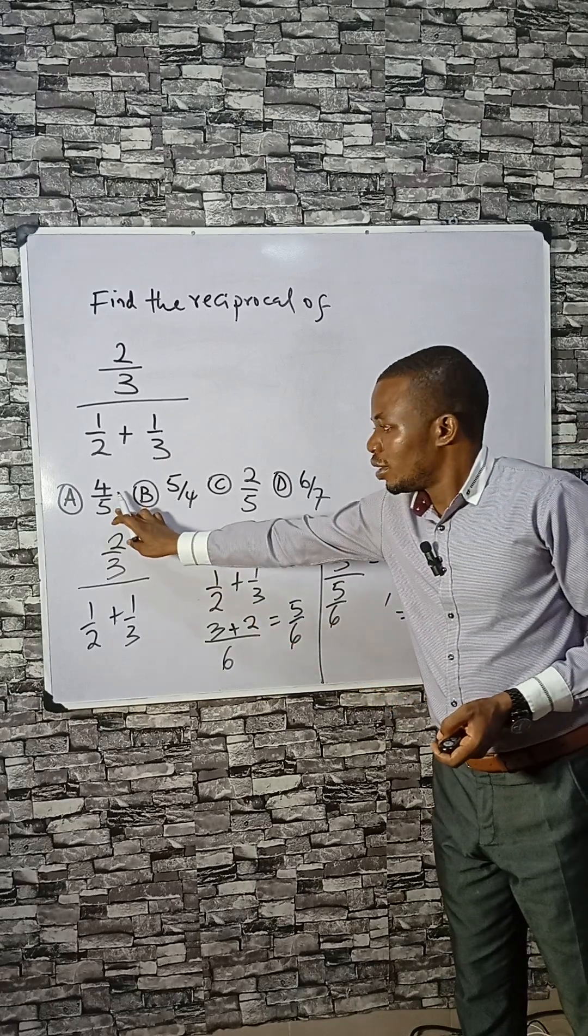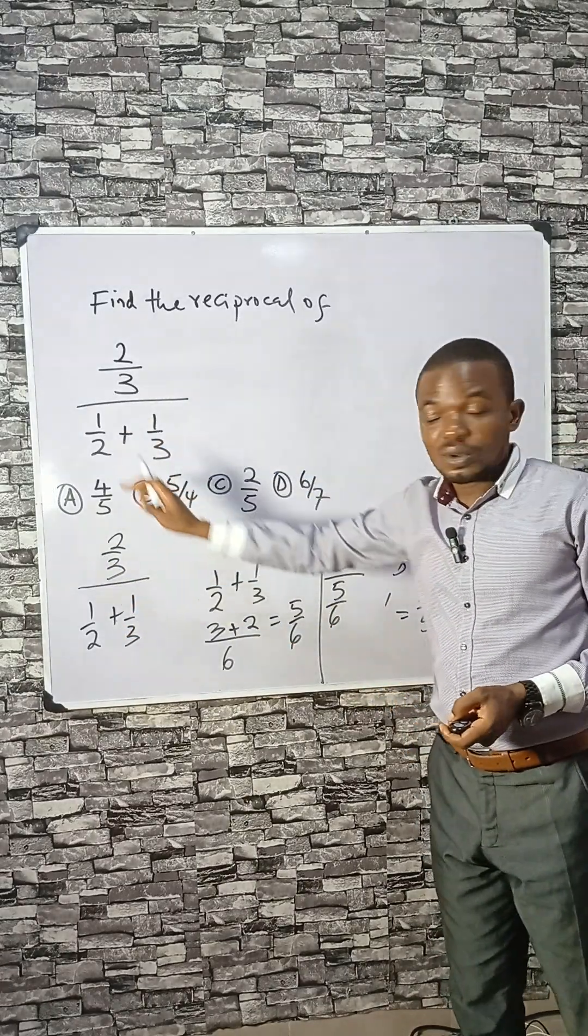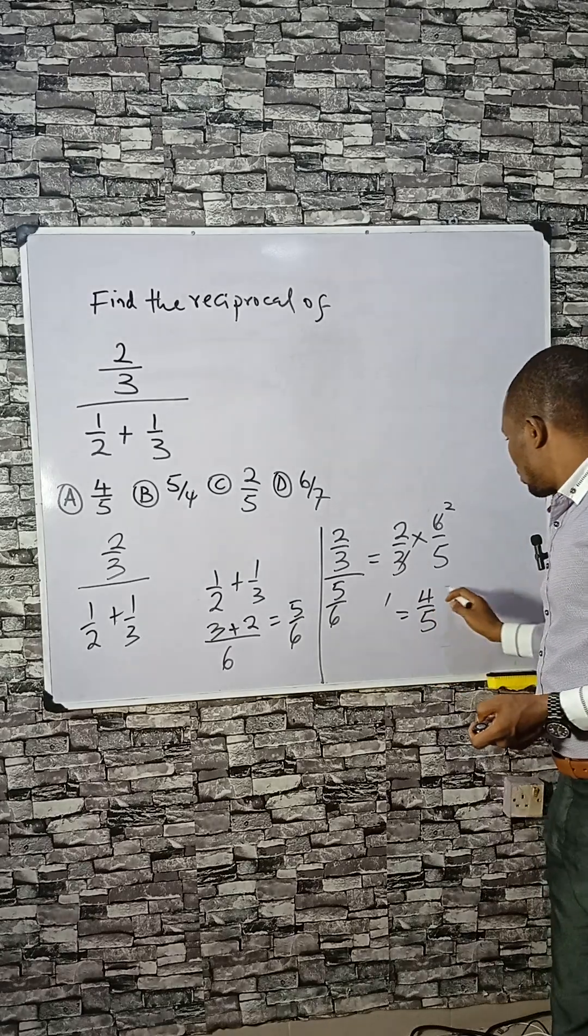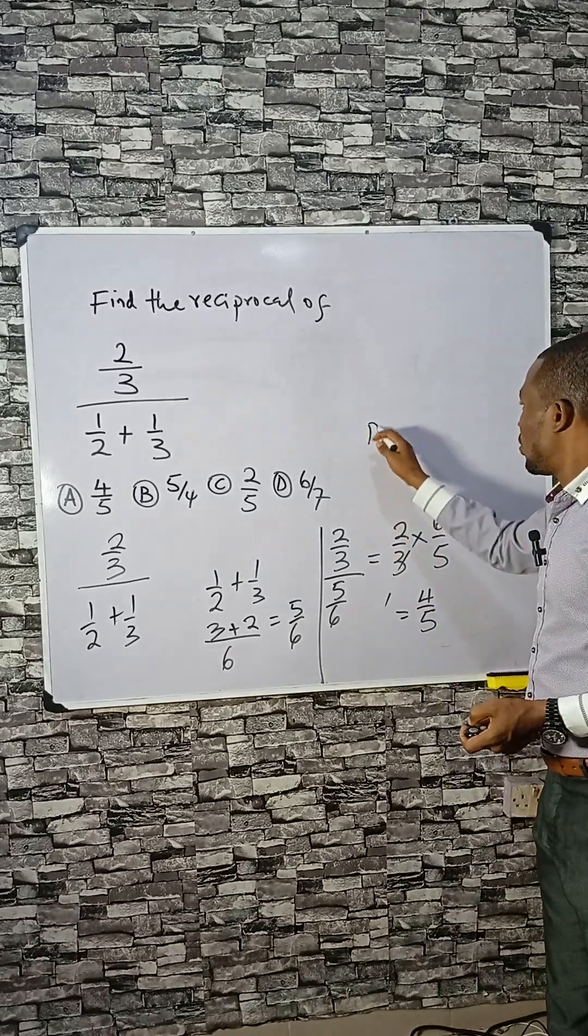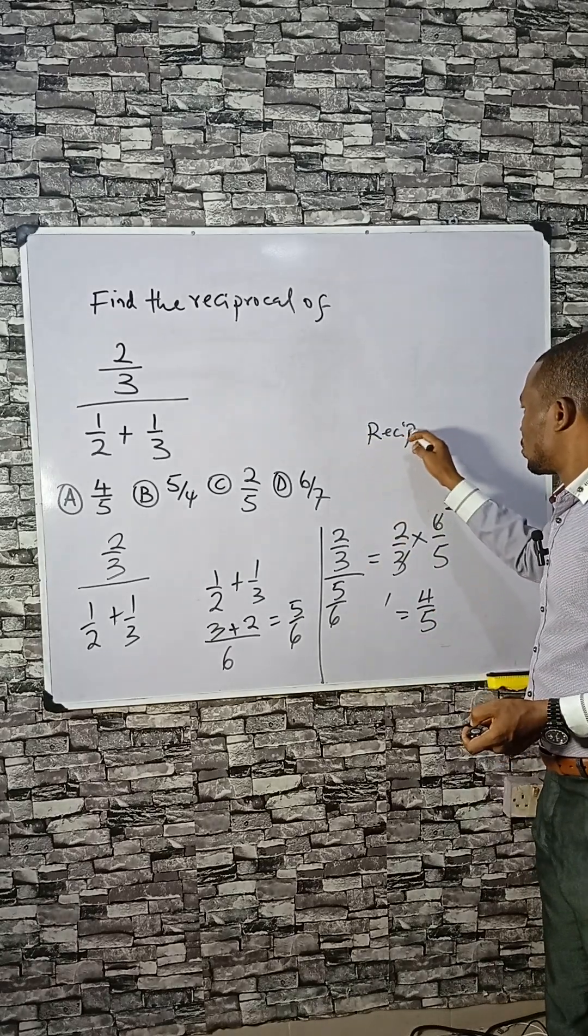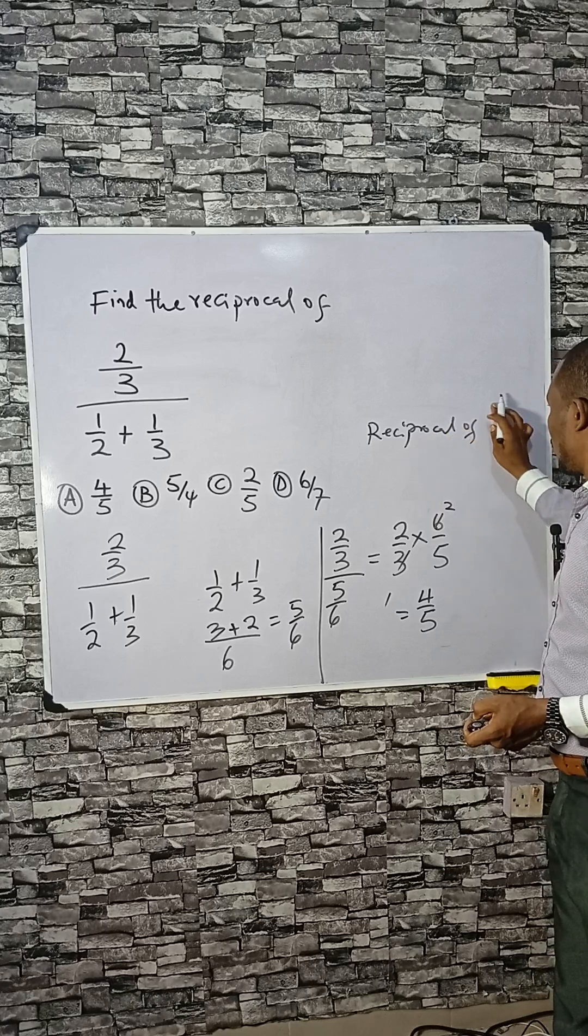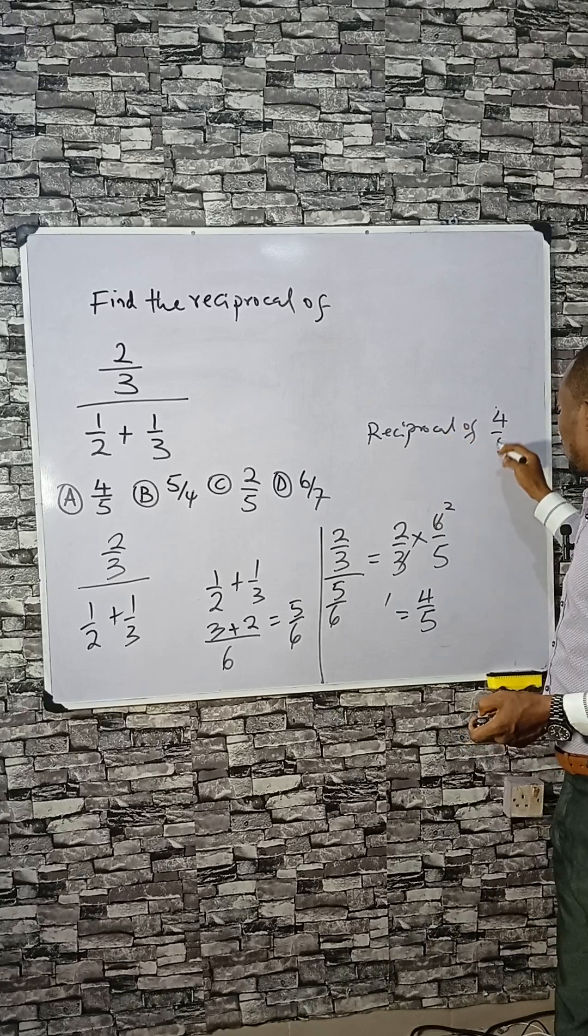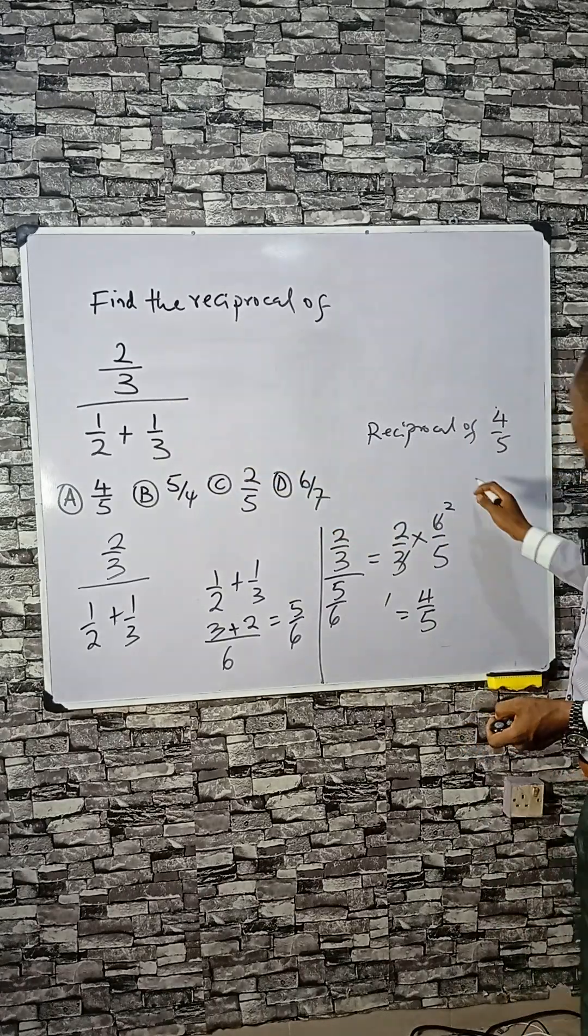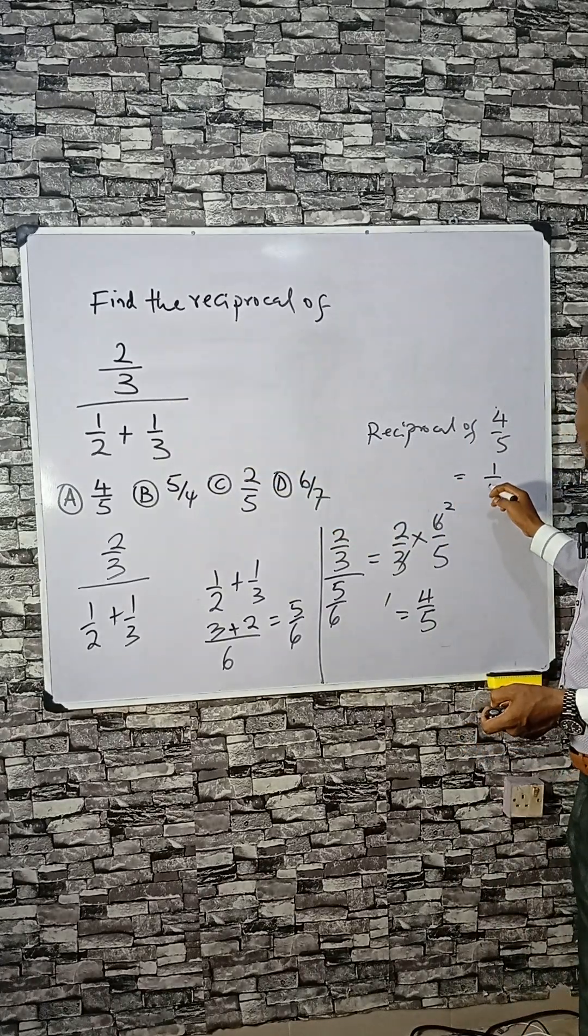You can see there is an option here, but that's not the answer because we were asked to find the reciprocal. That's 1 over this. So the reciprocal of 4 over 5, which is the result fraction there, is just 1 divided by 4 over 5.